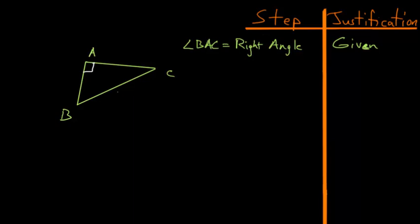If we call each of these sides by a letter — say A, B, and C — then what we're trying to prove is that A squared plus B squared equals C squared when you have a right triangle. The Greeks, and in particular Euclid, did not think about this theorem in terms of side lengths, but rather in terms of the squares that you can make on each of these sides.